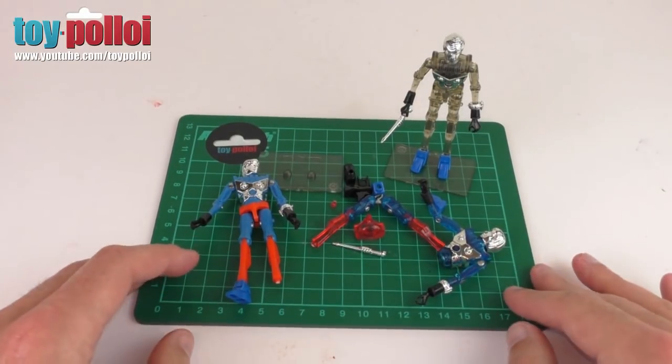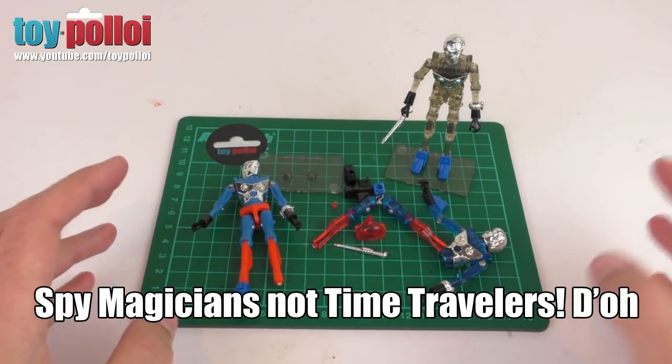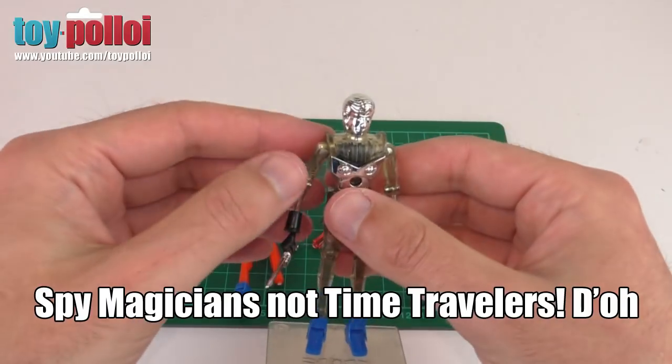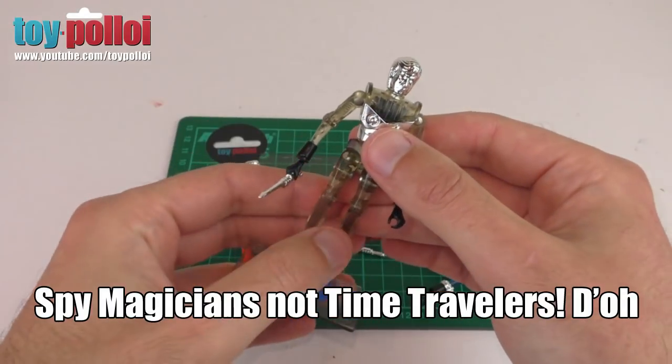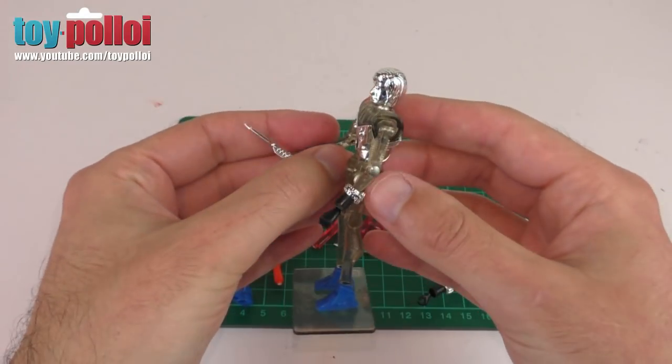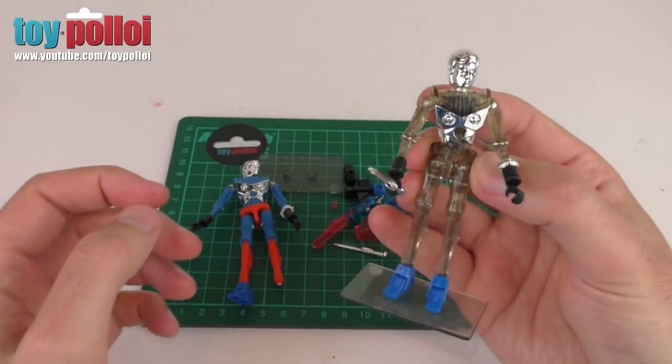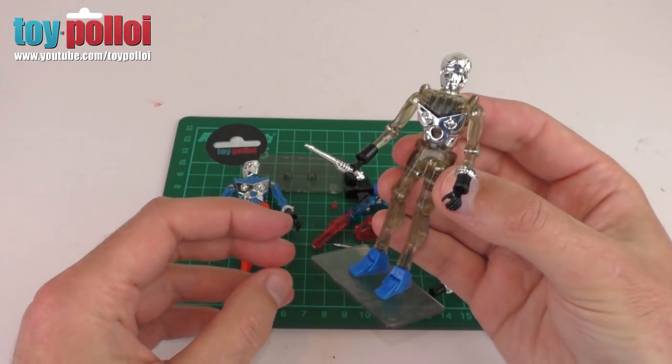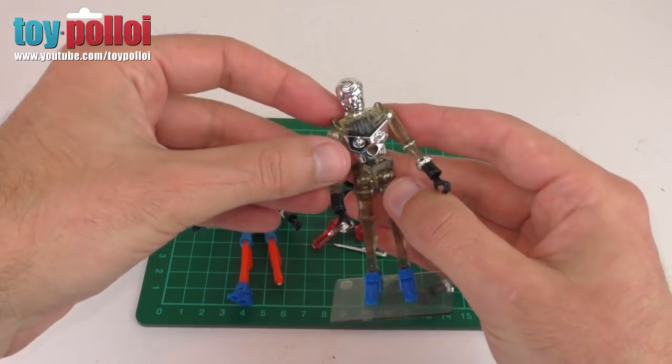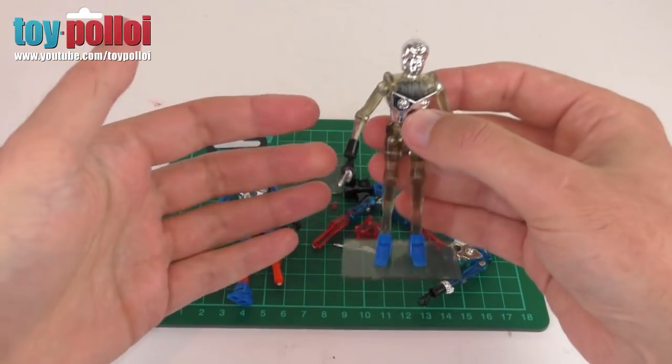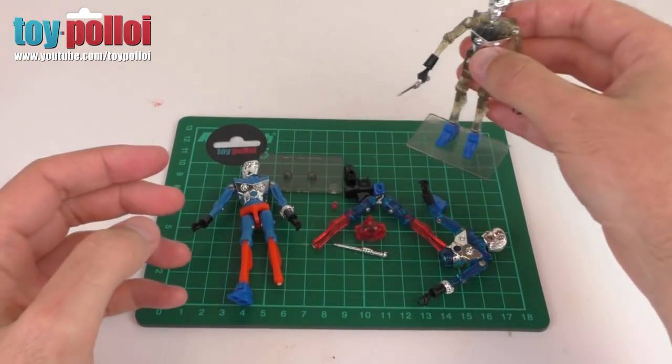As you can see here, I have a selection of Microman time traveler figures. These are reissue time traveler figures from around the early 2000s, reissues of the toys released back in the 70s. They have the same construction, but they're made in slightly different color plastics.